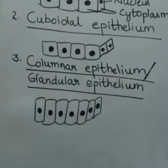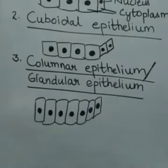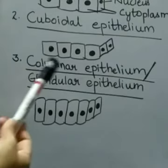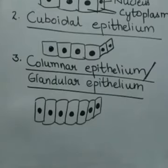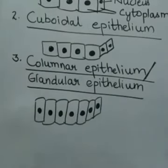Columnar epithelium forms the lining of the stomach, small intestine, and colon, forming a mucous membrane. It also forms the lining of the gallbladder and oviducts and facilitates movement across the cells. The functions of columnar epithelial tissue include absorption — for example, in the stomach and small intestine — and secretion, for example, mucus by goblet cells.